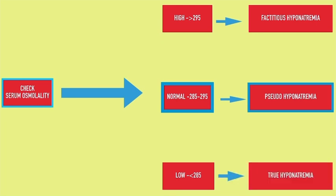If you don't have the facility to measure serum osmolality, you can exclude false hyponatremia by measuring random blood sugar, liver function test, fasting lipid profile, and asking for history of recent administration of mannitol and IVIG.